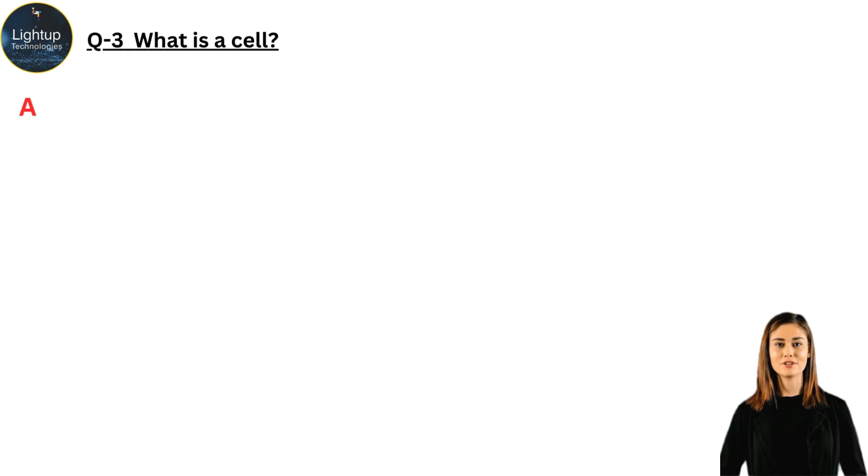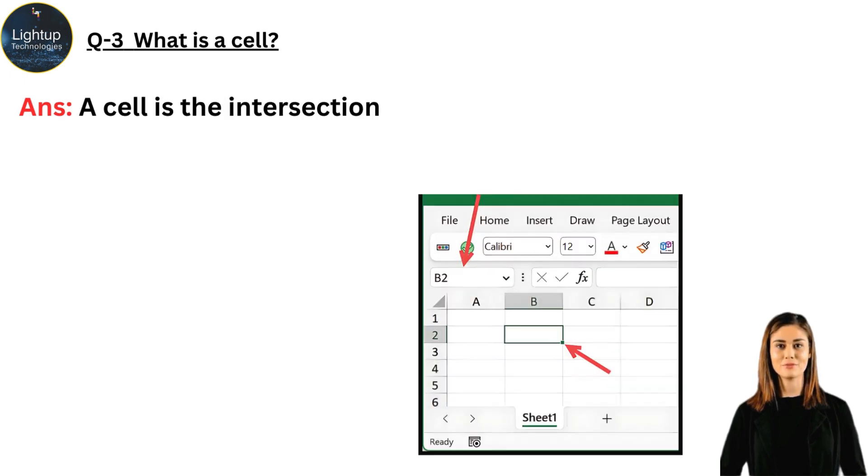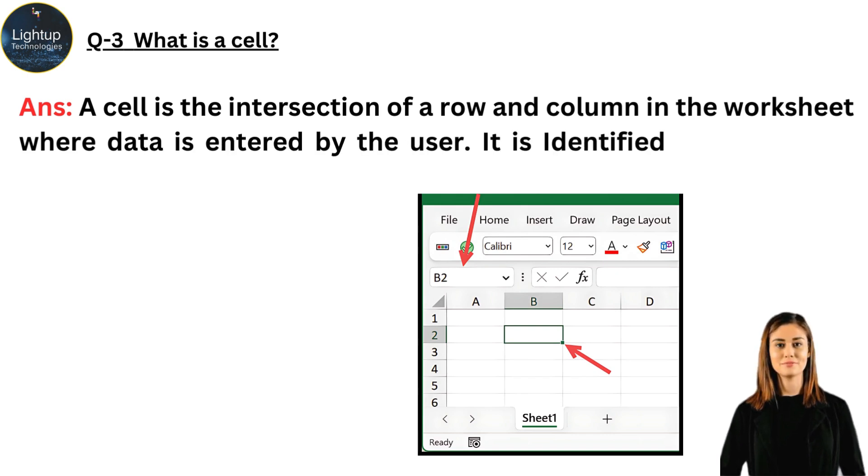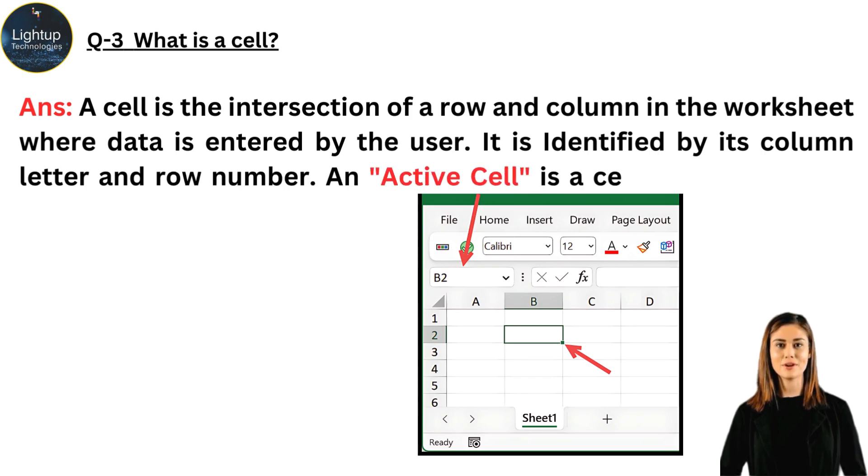What is a cell? A cell is the intersection of a row and column in the worksheet where data is entered by the user. It is identified by its column letter and row number. An active cell is a cell that is currently being edited.